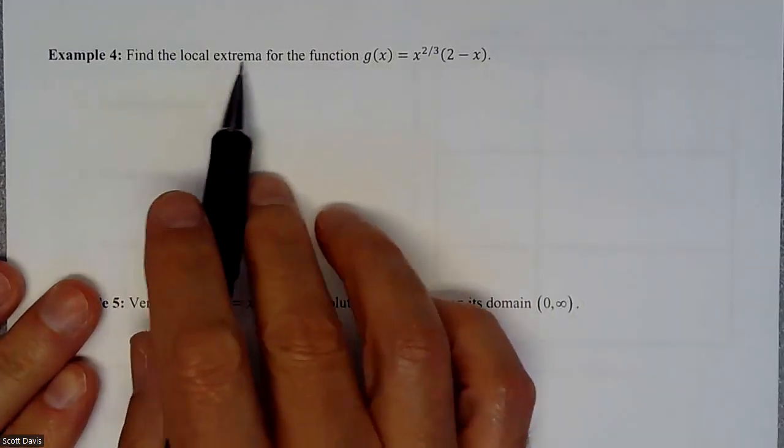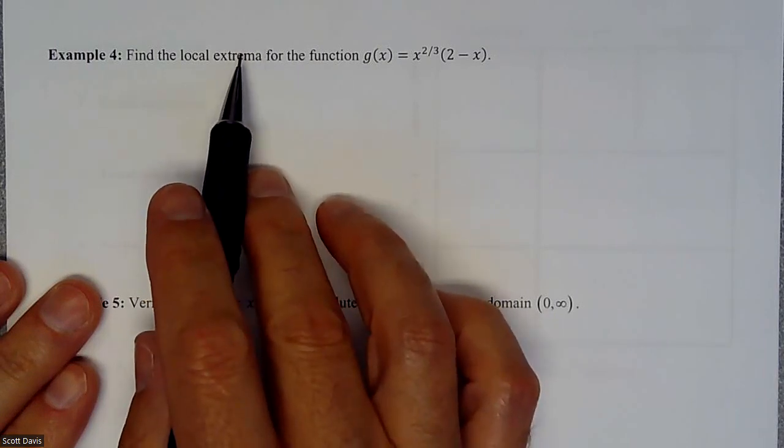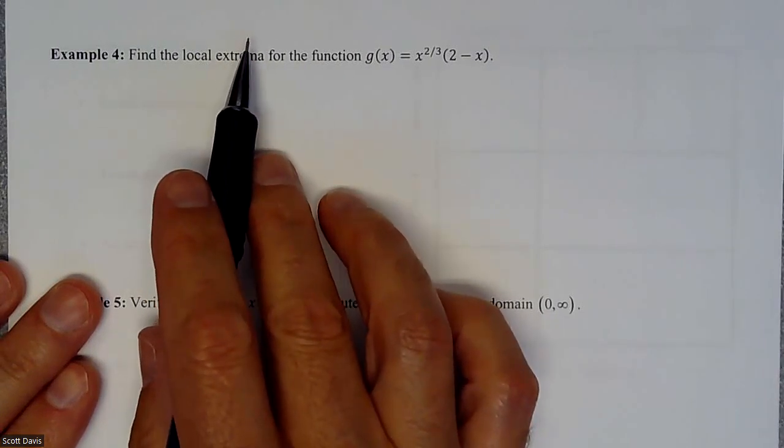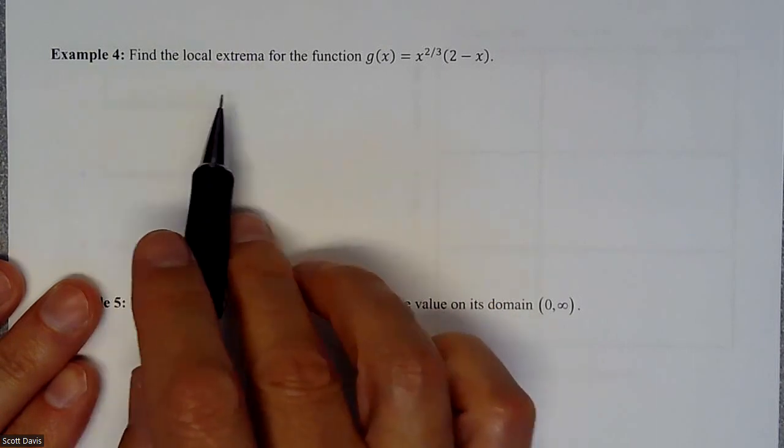In this example, we're going to be looking for local extrema, which means we're going to be looking for maxes and mins, which means we need to find the derivative, set it equal to zero, and test out some sections.